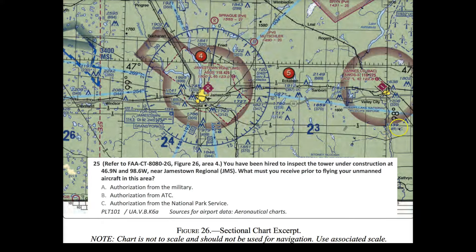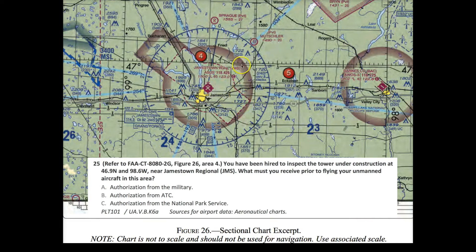Let's start with 98.6 longitude. We see the 98-degree longitude line here. At about 0.6 of the way — roughly halfway between 98 and 99 — you'll see a tower marked UC. That's the tower under construction. For the latitude, here's the 47-degree line; 46 is below it. At 46.9, we're almost to 47. Interpolating upward, this is the only tower near Jamestown that is under construction and almost at the 47-degree latitude line, and it lines up with 98.6.